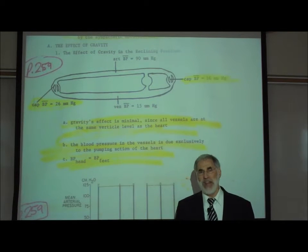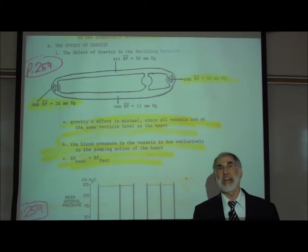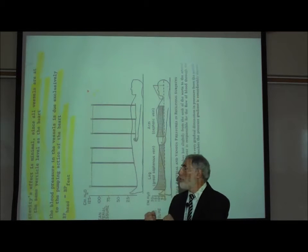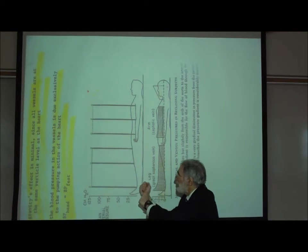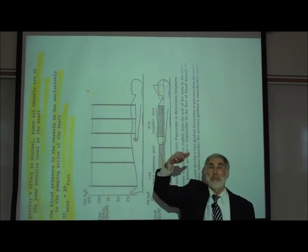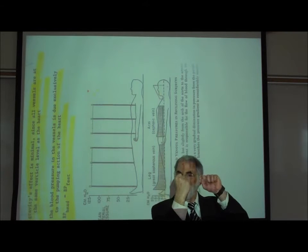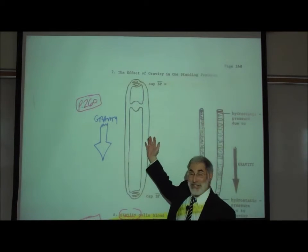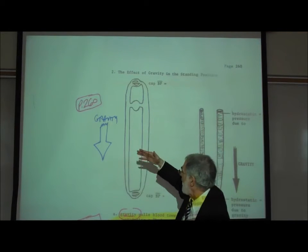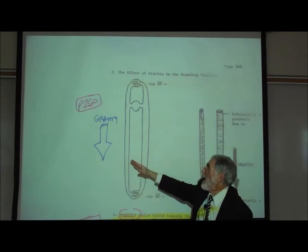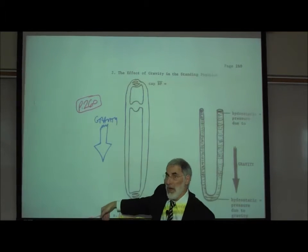Now let's consider what happens when an individual stands up. As a person stands up, gravitational pull pulls the blood and promotes its flow towards the feet and reduces the flow of blood up to the head. This is simply due to gravitational pull towards the ground. On page 260, we see the same person now standing upright — here's his heart, here's his head, here's his feet — and gravity is pulling the blood downwards.